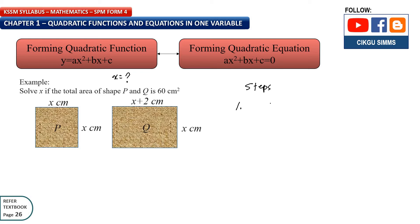So the first step, you need to form a quadratic function, y equal to ax squared plus bx plus c. That means, for example, y equal to x squared plus 2x plus 3. So you will have a relationship between x and y.